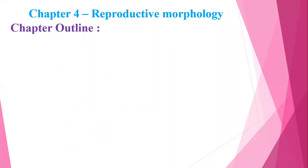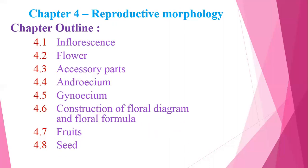Chapter 4 is Reproductive Morphology. The chapter outline is: first, Inflorescence — which consists of reproductive parts; second, Flower; third, Accessory Parts — the parts involved in reproduction; fourth, Androecium — the male reproductive part of the plant. Androecium consists of two parts: Anther and Filament. Pollen grains are present in the anther, and pollen grains are involved in pollination.